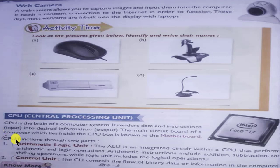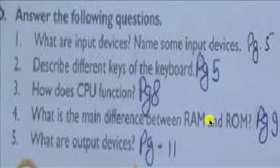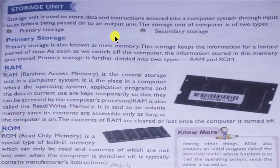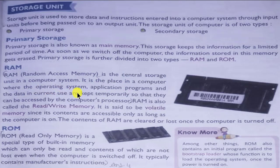Question 4: what is the main difference between RAM and ROM? Draw a line dividing the page — write RAM on one side and ROM on the other. RAM — random access memory — is the central storage unit in a computer system. It is a place where the operating system, application programs, and data currently in use are kept temporarily so that they can be accessed by the computer's processor.